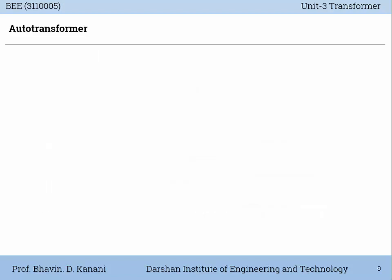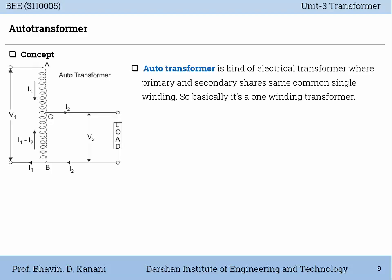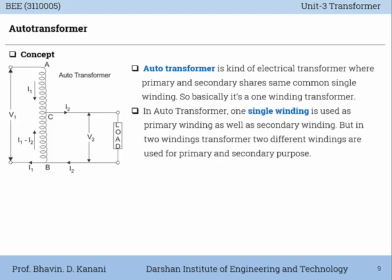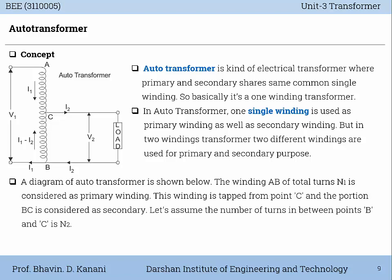Now let us understand the auto transformer. As shown in this figure, an auto transformer is a kind of electrical transformer where primary and secondary share the same common single winding. So basically it is a one-winding transformer. In an auto transformer, one single winding is used as both primary and secondary winding, but in a two-winding transformer, two different windings are used for primary and secondary purposes. The winding AB of total turns N1 is considered as primary winding. This winding is tapped from point C and the portion BC is considered as secondary. Let us assume the number of turns between points B and C is N2.